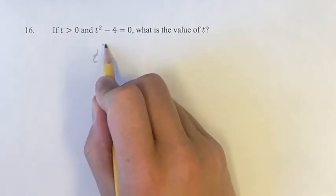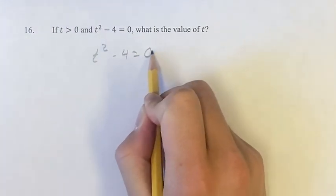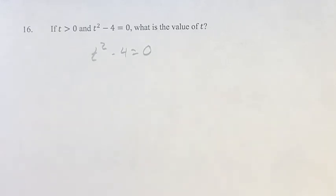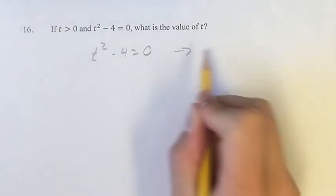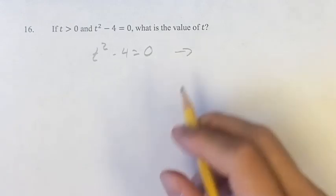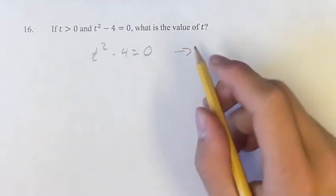So starting first with t squared minus 4 is equal to 0, let's just find the solutions to this. Now, there's two things you can do. You can say, okay, I have a quadratic here,